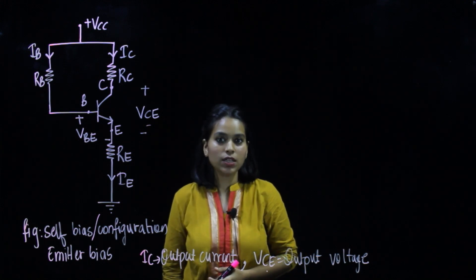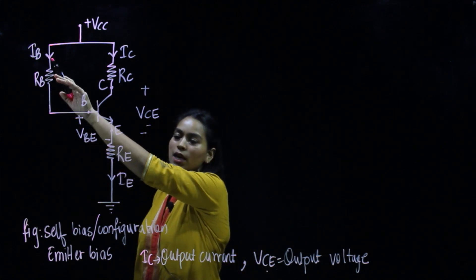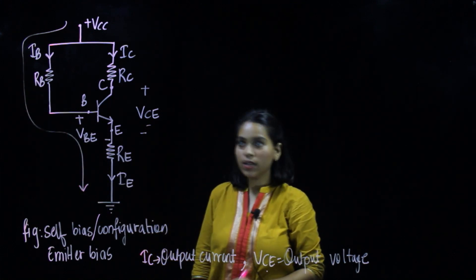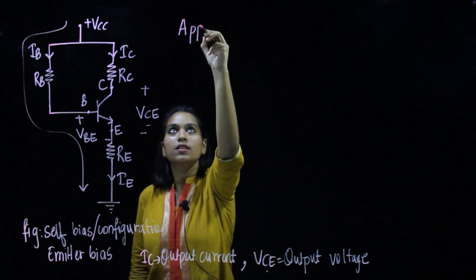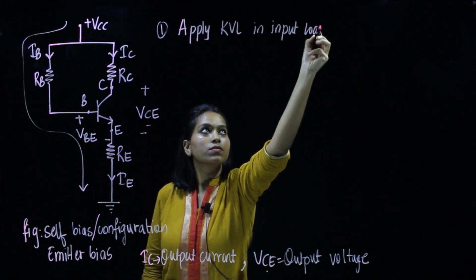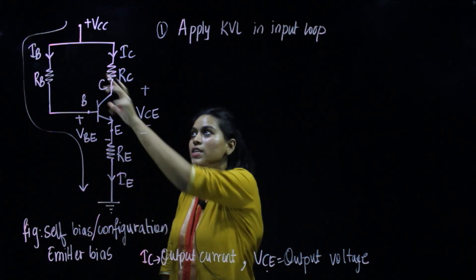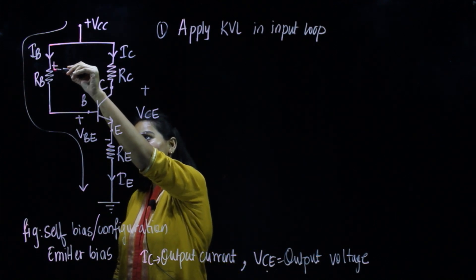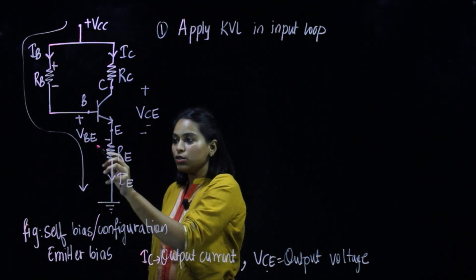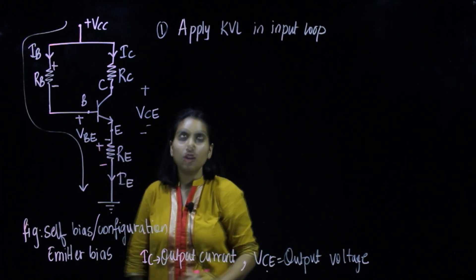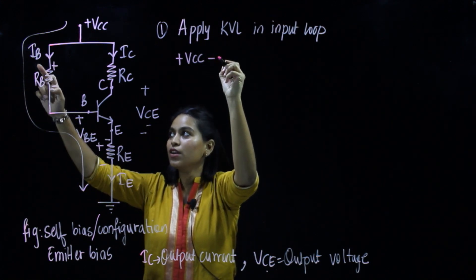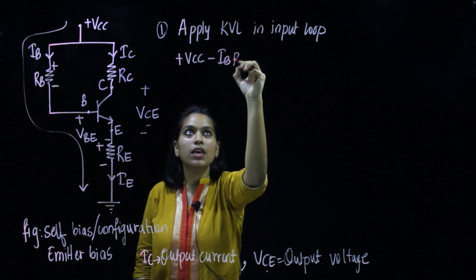Before applying KVL we need to see the direction of current. We can see that current IB is flowing downwards, so we will start from here until ground. The first element is VCC — it is positive, so the sign for resistor RB is positive and the second sign is negative. In the path we also have resistor RE, where the first sign is positive and the second is negative.